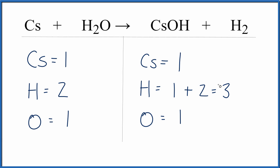When I look at this, I see I have a three here and a two here. Everything else is the same. If I could get this to be an even number, then I could probably fix this pretty easily. If I put a two as my coefficient in front of the CsOH, that looks like that would solve the problem.